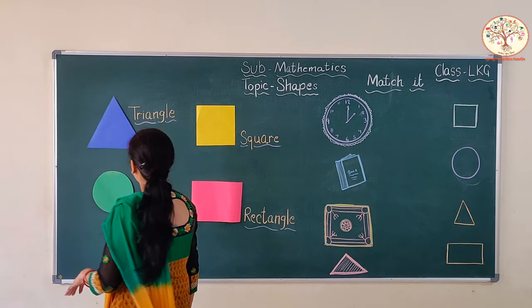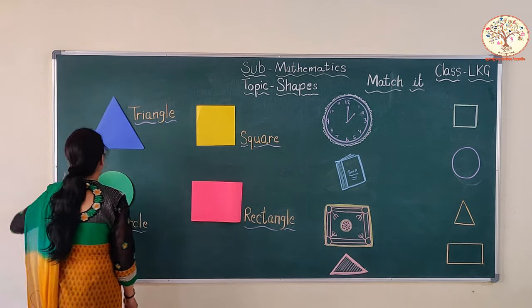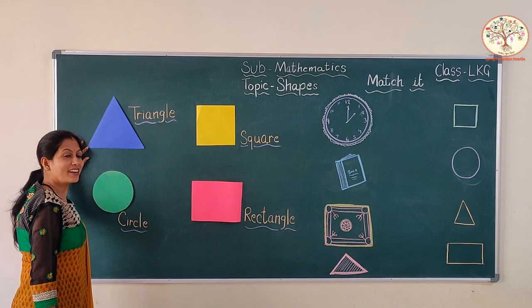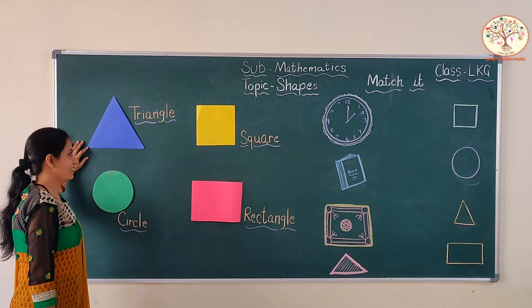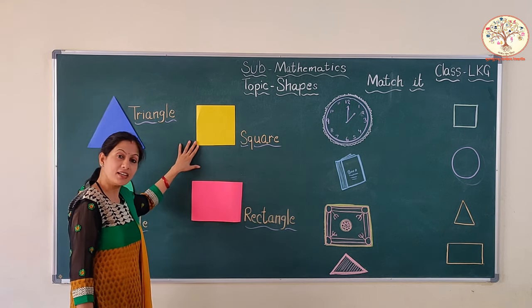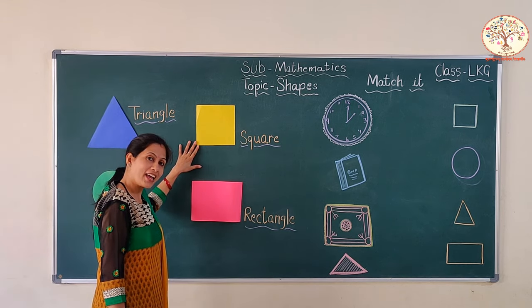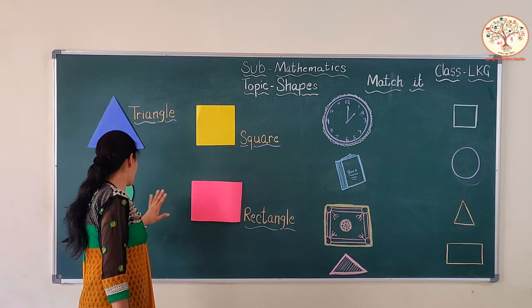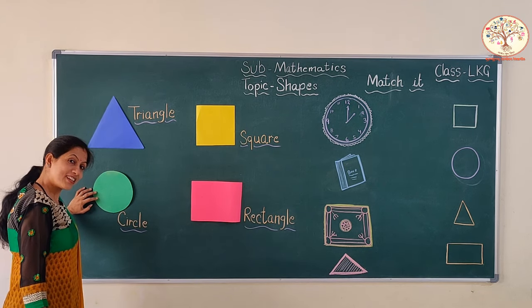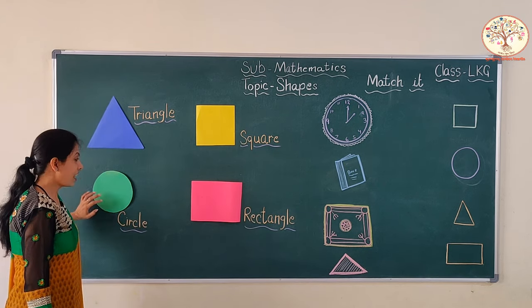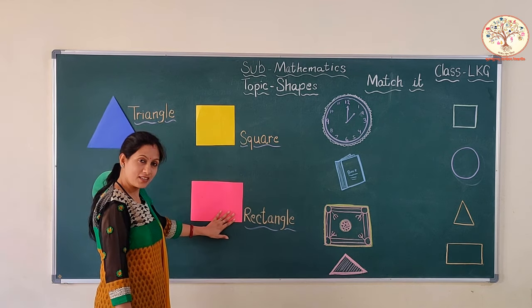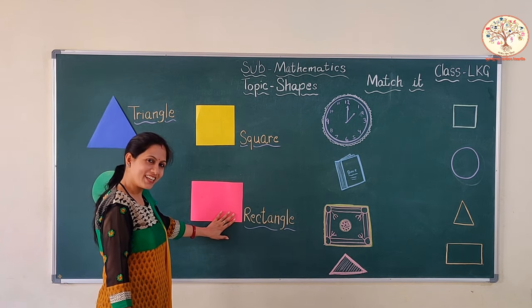Let's see on the board. Which shape is this? Triangle. Very good. And this one? Square. And this circle. And what is this shape? Rectangle.